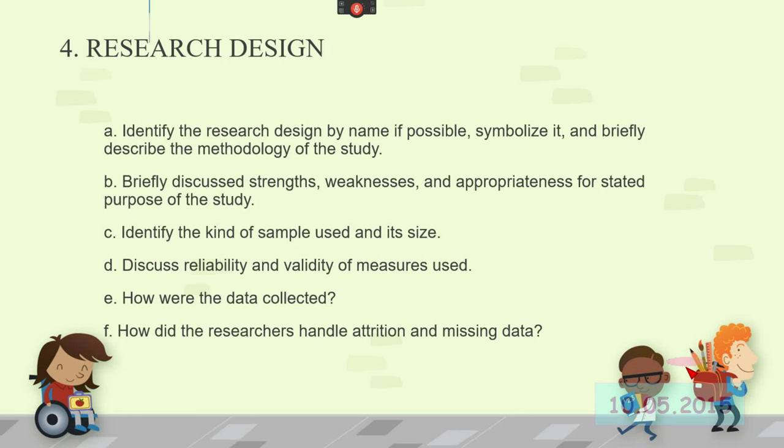So you have to read through a whole research report, not just the method section of a piece of literature, to kind of understand what the research design is. Briefly discuss the strengths and weakness and the appropriateness for the purpose of the study. Identify the kind of sample that was used and its size. Discuss reliability and validity measures. How were the data collected. How did the researcher handle attrition and missing data.